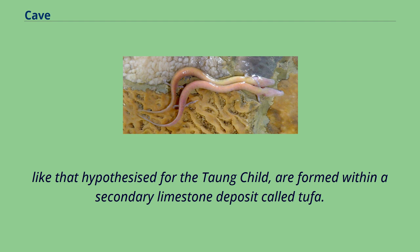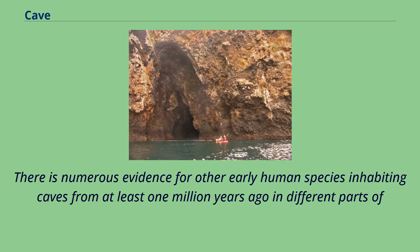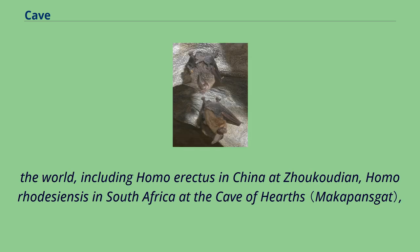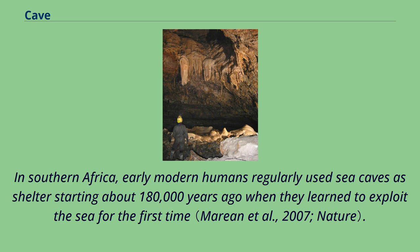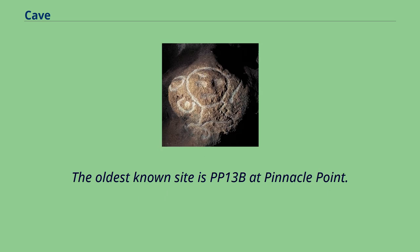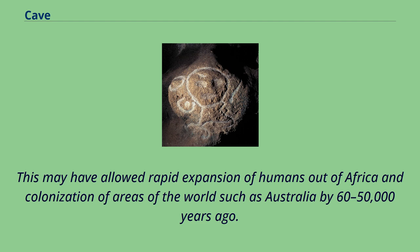There is numerous evidence for other early human species inhabiting caves from at least 1 million years ago in different parts of the world, including Homo erectus in China at Zhoukoudian, Homo rhodesiensis in South Africa at the Cave of Hearths, Homo neanderthalensis and Homo heidelbergensis in Europe at the archaeological site of Atapuerca, Homo floresiensis in Indonesia, and the Denisovans in southern Siberia. In southern Africa, early modern humans regularly used sea caves as shelter starting about 180,000 years ago when they learned to exploit the sea for the first time. The oldest known site is PP13b at Pinnacle Point. This may have allowed rapid expansion of humans out of Africa and colonization of areas of the world such as Australia by 60–50,000 years ago.